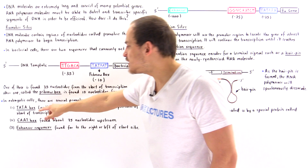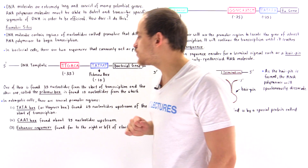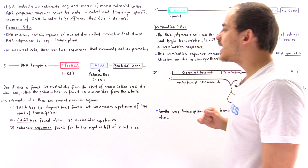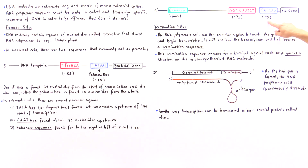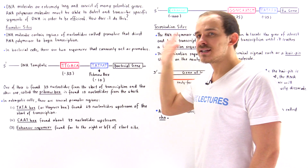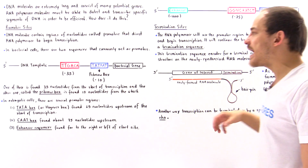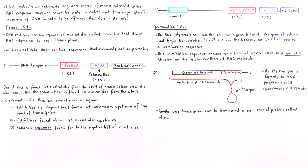The TATA box is also known as the Hogness box, and it is found 25 nucleotides to the left of the start of transcription.